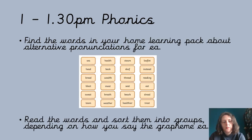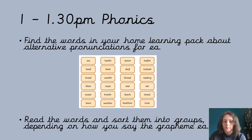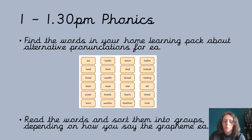From 1 to 1:30 this would usually be our phonics time. In your home learning pack there are some words about alternative pronunciations for the EA grapheme — it can be pronounced in all kinds of different ways. What you need to do is read the words and sort them into groups depending on how you would say the EA grapheme. We've already learned in school the 'ee' sound, like in 'heat' or 'meat', but not all of these words are said that way. If you want to cut them out you can, or you can colour code them — it's entirely up to you how you sort them.